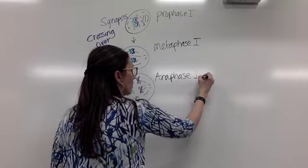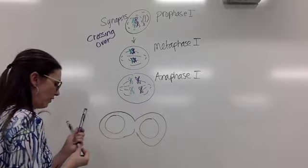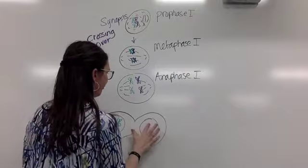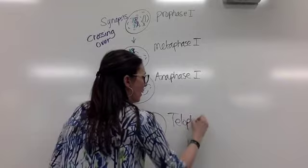And then you go into telophase 1. So you can see nuclear material reappear. And then you have those chromosomes. And they would be in each nucleus. That is telophase 1. So that's the first part, that's the first division.